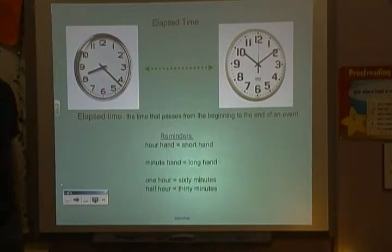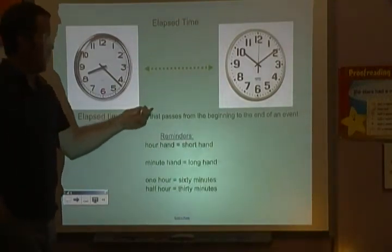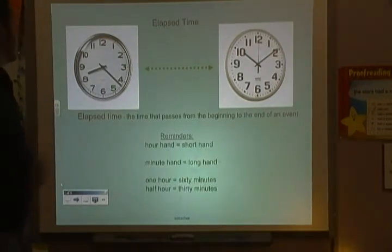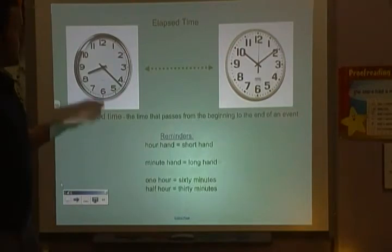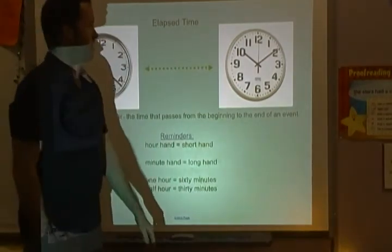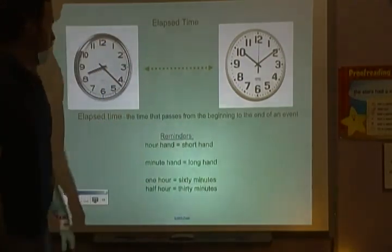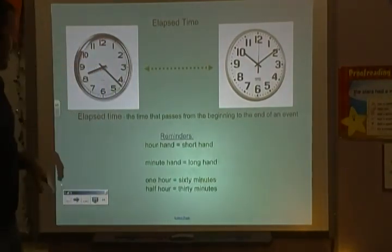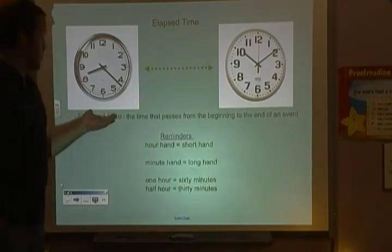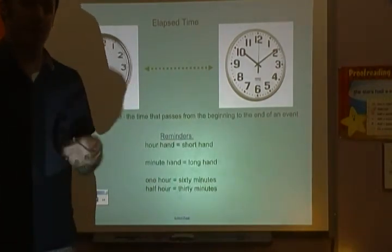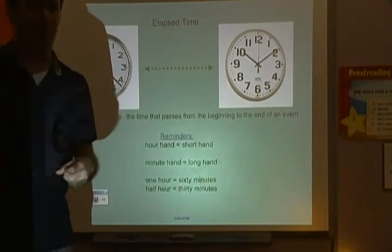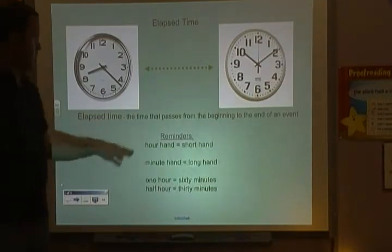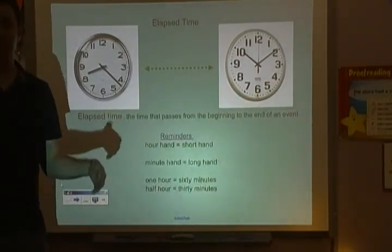Elapsed time is the time that passes from the beginning to the end of an event. For example, on the clocks it's 8:22, and the second clock says about 10:10. So elapsed time is asking how much time has passed between 8:22 and about 10:10. Students, go ahead and press the pause button and write that important vocabulary word down.